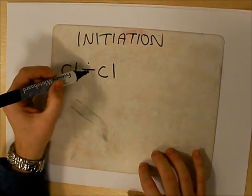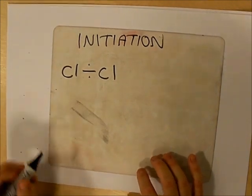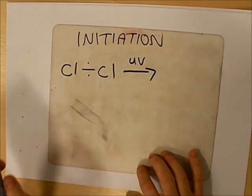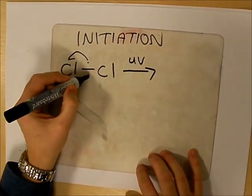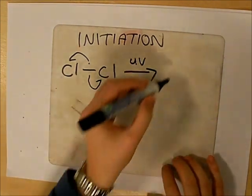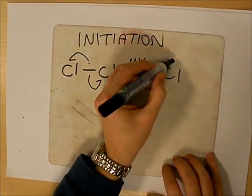There are two electrons in a covalent bond. UV light will cause photodissociation. It will cause this bond to break homolytically, one electron going onto each chlorine, which makes two free radicals.